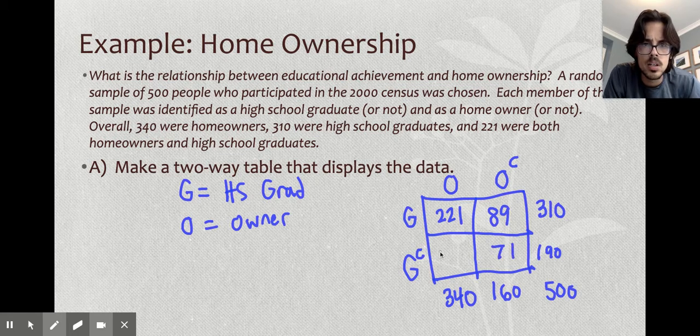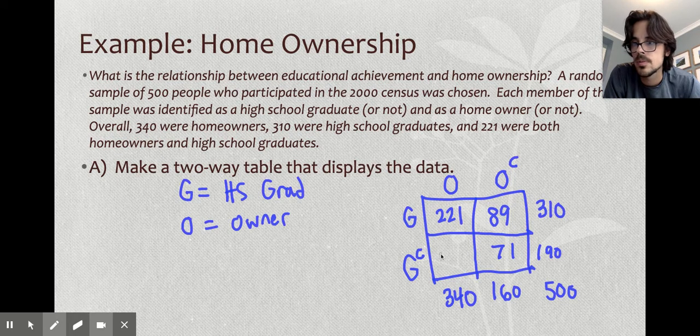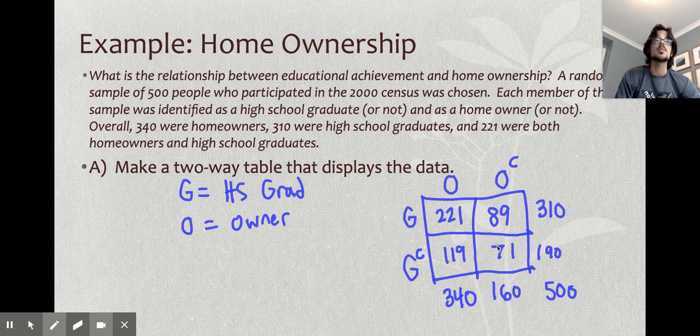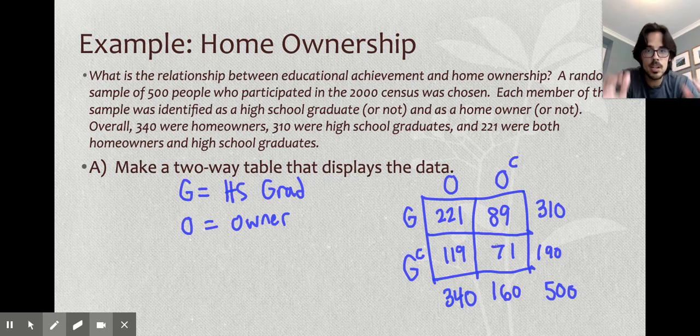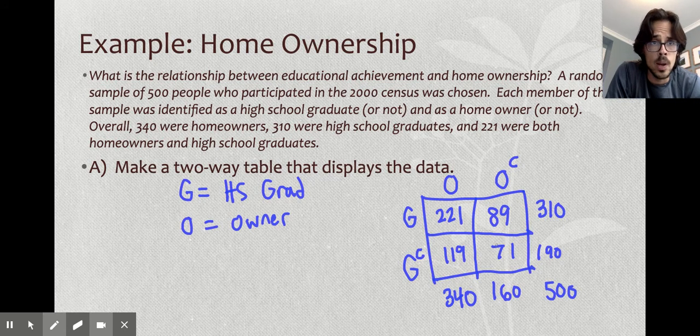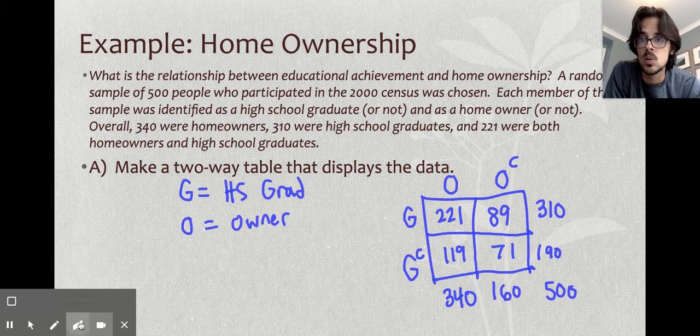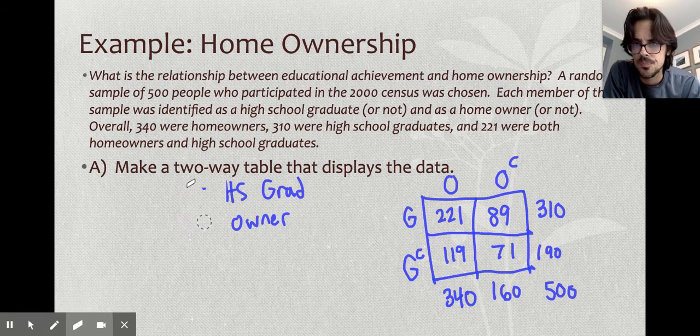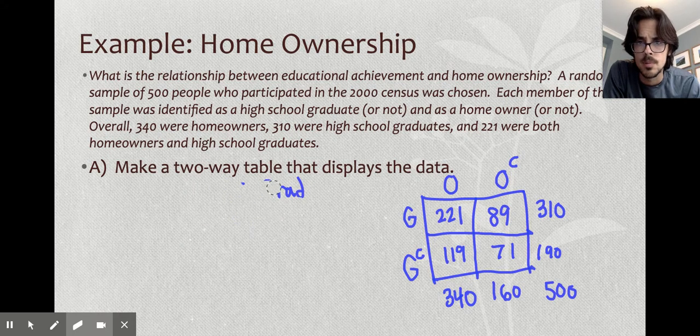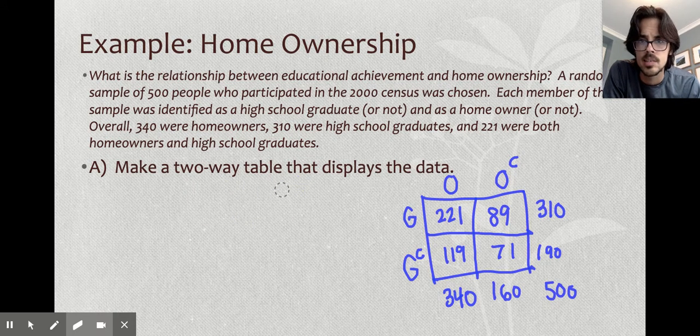So there's 221 that are both right here. And once you know that, you can just start subtracting things. This would be a 190 to get 500. I can do 310 minus 221 and that'll get me that box. So basically you just do math now and you can fill out the whole inside of this picture. It's going to be a 71. I think that's 119. So you get your whole inside filled out. It takes a tiny bit of effort to set up a little two-way table, but once you have it, you can answer all sorts of probability questions super quickly.